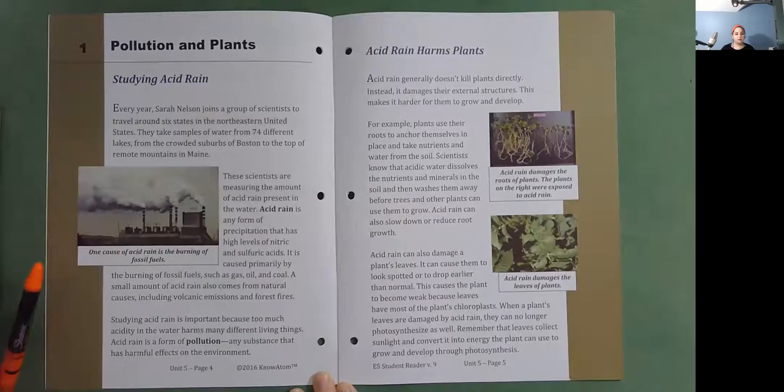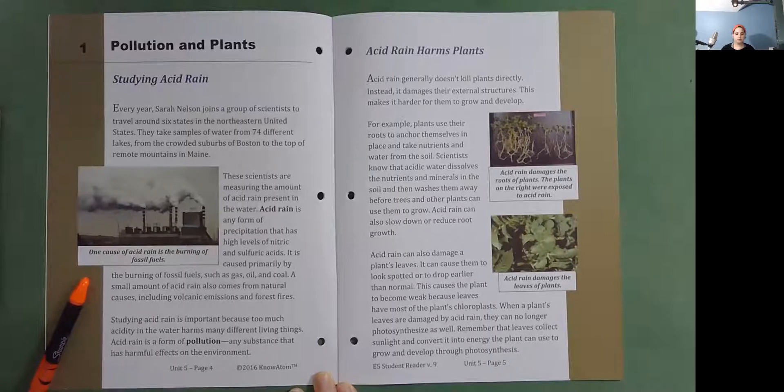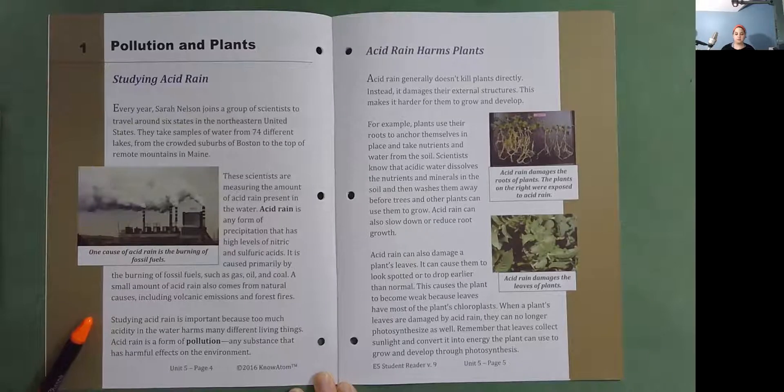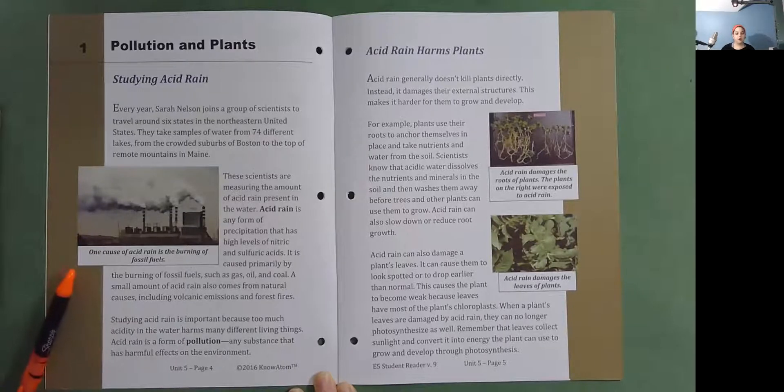It is caused primarily by the burning of oil and coal. A small amount of acid rain also comes from natural causes, including volcanic emissions and forest fires. Studying acid rain is important because too much acidity in the water harms many different living things. Acid rain is a form of pollution, any substance that has harmful effects on the environment. One cause of acid rain is the burning of fossil fuels.